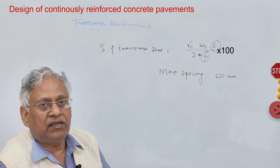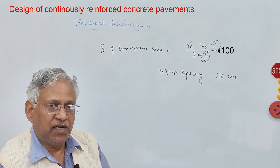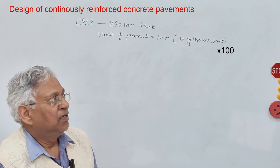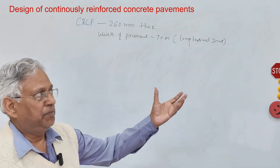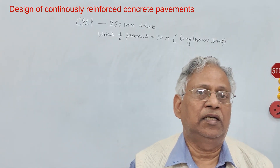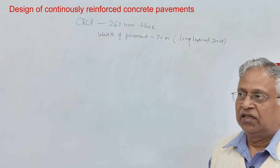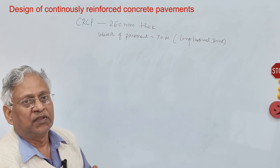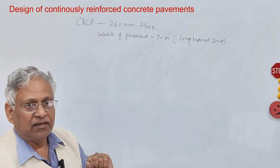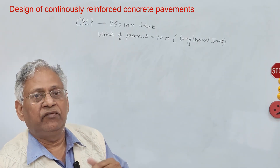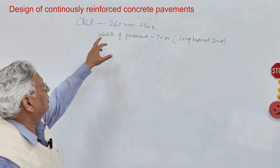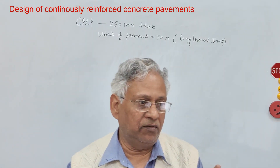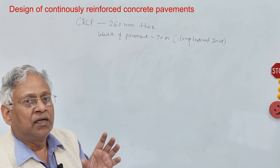So that is how you design a continuously reinforced concrete pavement — starting with IRC 58 and ending with the design of steel in the longitudinal and transverse direction. Let us take a quick example. Design a CRCP for a 260 mm thick concrete pavement. The 260 mm comes from IRC 58 design: 250 mm is the required thickness, plus 10 mm extra to account for texture and wear. The total pavement width is 7 m with a longitudinal joint, meaning the slab width is 3.5 meters.